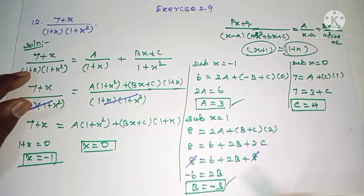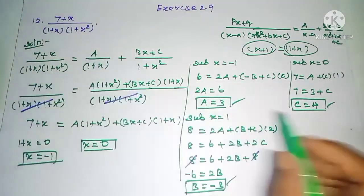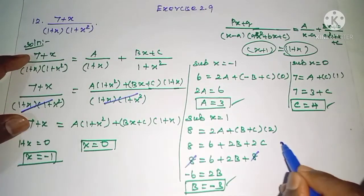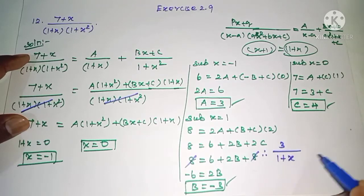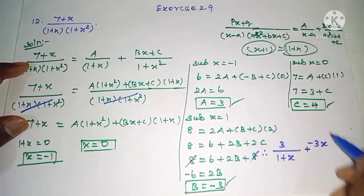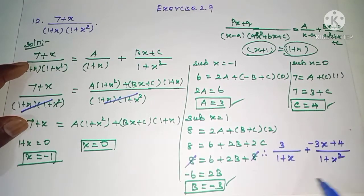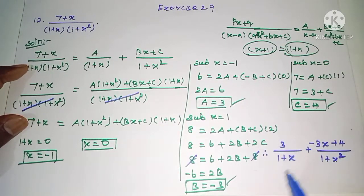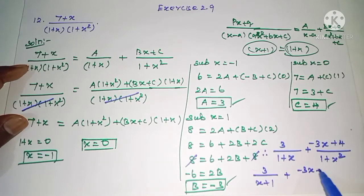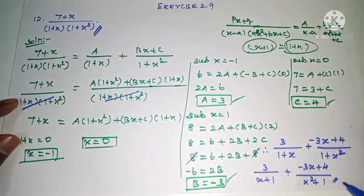Now we have all values: A = 3, B = −3, C = 4. Substituting back, the partial fraction decomposition is: 3 divided by (x + 1) plus (−3x + 4) divided by (x² + 1). So the final answer is 3/(x + 1) + (−3x + 4)/(x² + 1). This is the partial fraction for the given rational expression. Thank you.